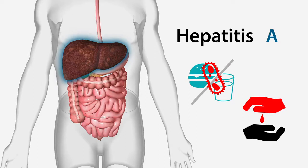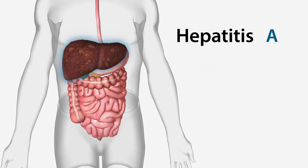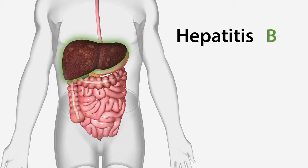Good hygiene, proper sanitation, and vaccination can help to prevent hepatitis A. Unlike hepatitis A, hepatitis B can cause both an acute infection and a long-term or chronic infection, which might lead to inflammation in the liver.